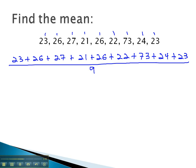We'll probably want to do the addition on our calculator. 23 plus 26 plus 27 plus 21 plus 26 plus 22 plus 73 plus 24 plus 23. And when we add those all up, we get a total of 265, which needs to be divided by 9 to give us our average or measure of center of these numbers.